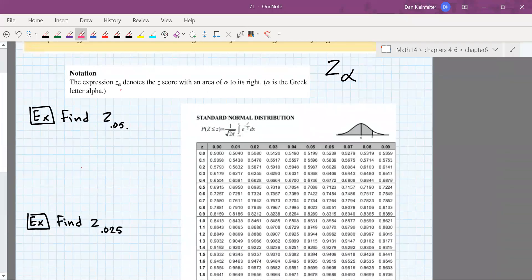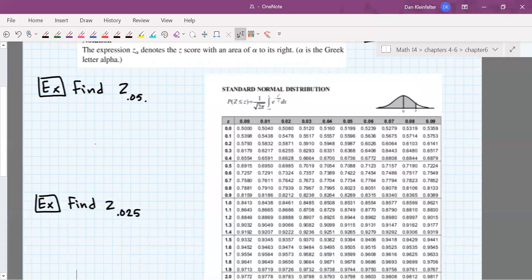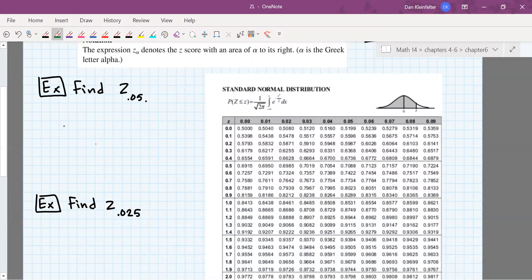And then a little bit of notation. The z subscript alpha, this is yet another Greek letter, it's the lowercase Greek letter alpha. This z-alpha denotes the z-score with an area of alpha to its right. For z.05, if 0.05 is to the right, then it must be 0.95 to the left.